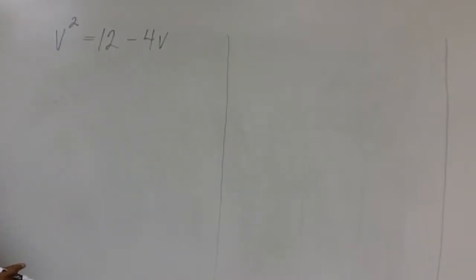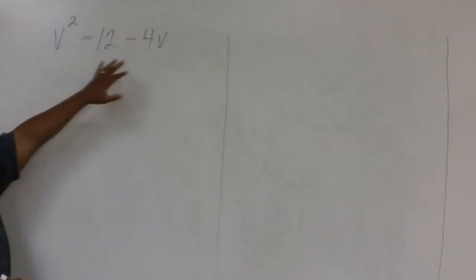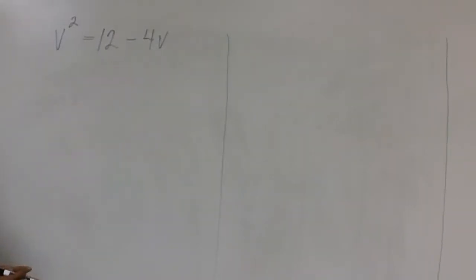Notice that the equation has not been set equal to zero. So to set it equal to zero, we'll need to subtract 12 from both sides and add 4V to both sides.